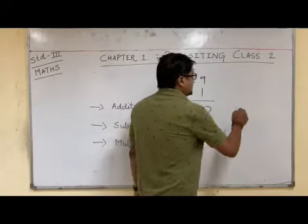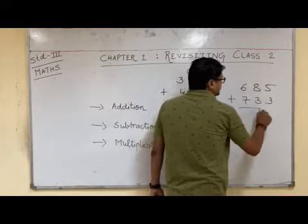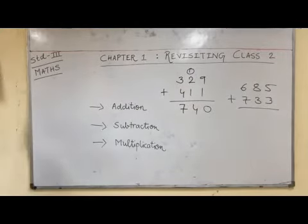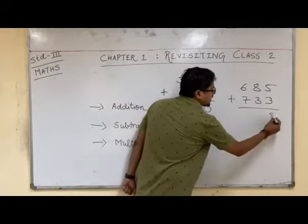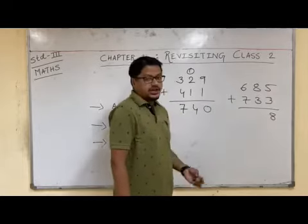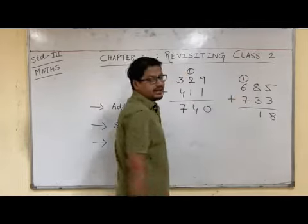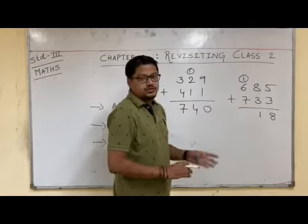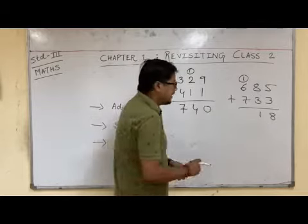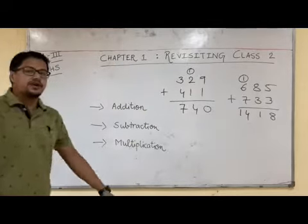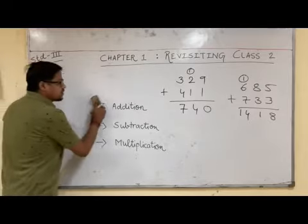Let us take one more example: 685 plus 733. 5 plus 3 is 8. 8 plus 3 is 11 — 1 is written, 1 is carried over. 7 plus 6 is 13, plus 1 carry is 14. The answer is 1418. This is how addition was done in second standard, and similar addition with bigger numbers will be there in third standard.